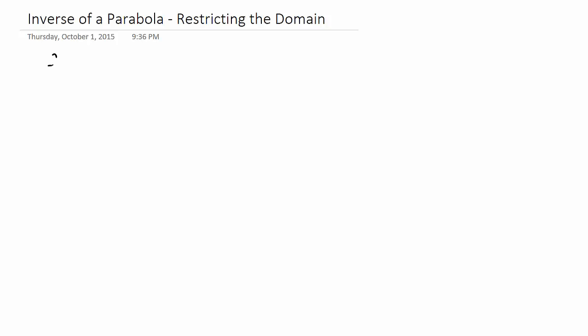Here we're going to look at a more complicated case where we're trying to find the inverse of a parabola, which is not a one-to-one function. Now why this is a problem is because when you take its inverse, you get something that is not a function.